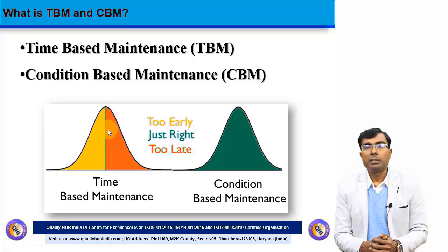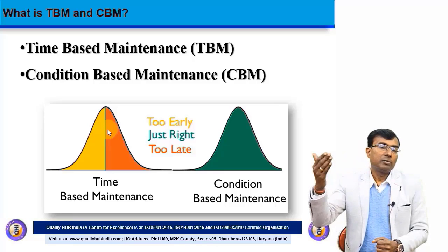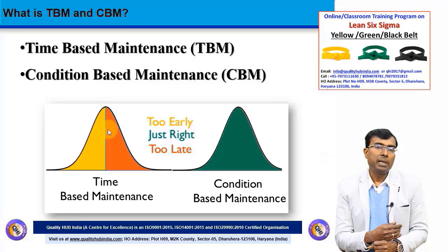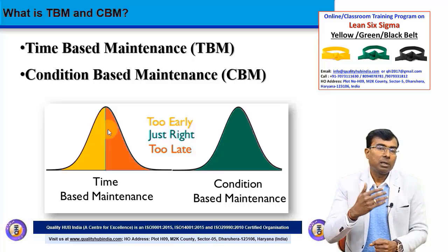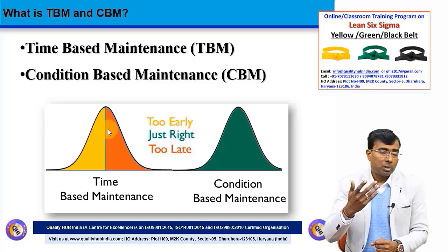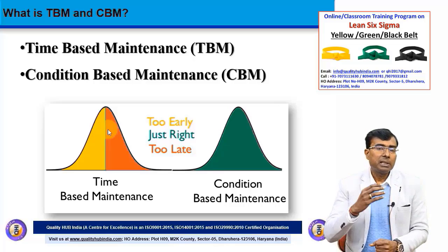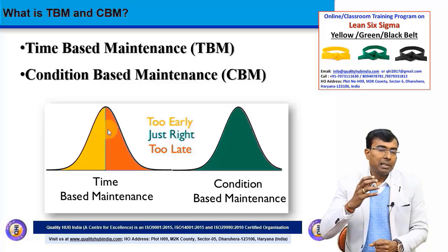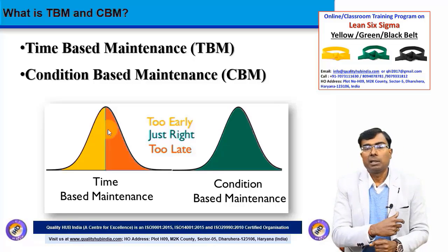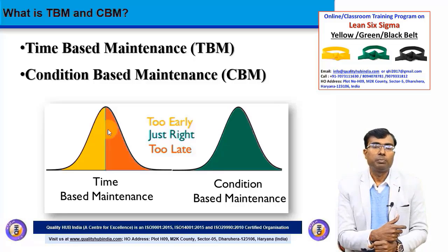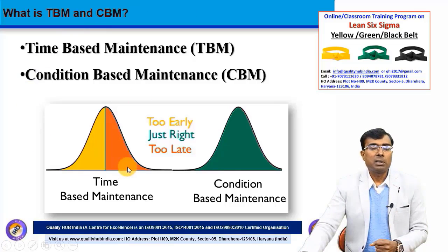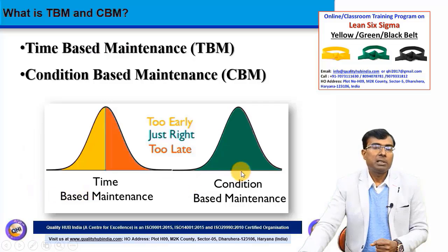A typical scenario is preventive maintenance scheduled at certain intervals — for some equipment it may be every month, every quarter, fortnightly, or weekly. These schedules are based on a fixed time frame and do not take into account the actual condition of the various parts of the machinery. Most organizations are comfortable with time-based maintenance because condition-based maintenance requires some expertise, which we will explore later.